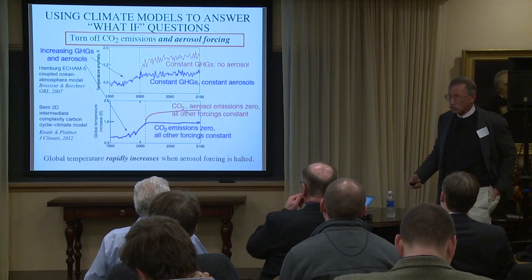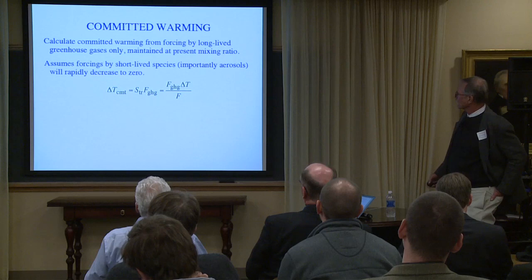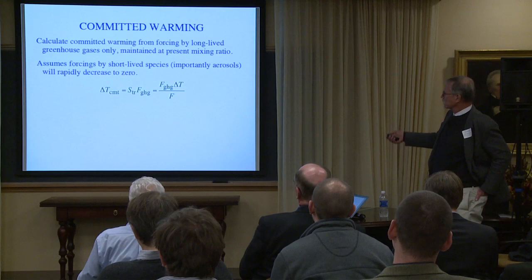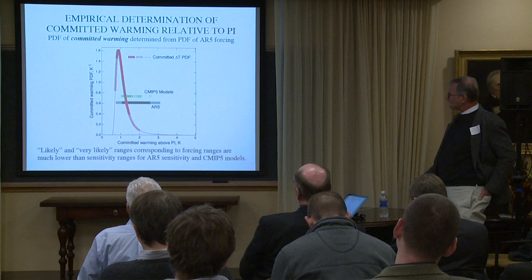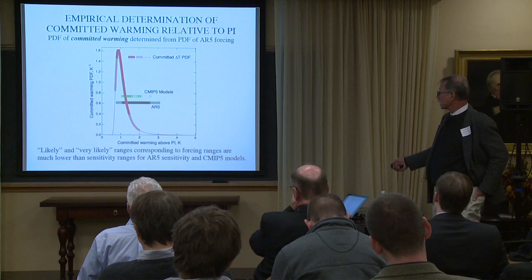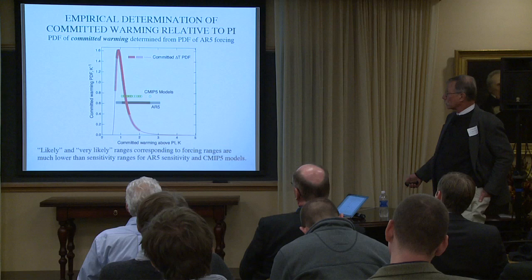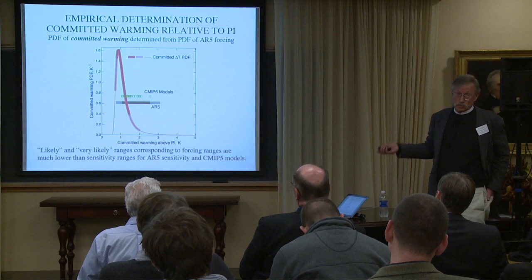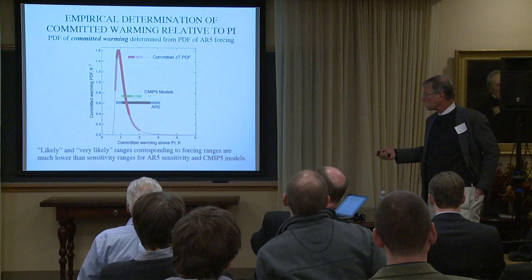This leads to the concept of committed warming — a term I'll introduce and define. It assumes that forcing by short-lived species, importantly the aerosols, goes to zero. We calculate the committed warming: the change in temperature equals the forcing of greenhouse gases divided by total forcing, which is still dependent on the total forcing — which I don't know — times delta T, which I do know. So I get a PDF that looks essentially identical to the transient sensitivity PDF I just showed. It basically says we've got a committed warming above pre-industrial in the likely range up to 1.5°C, maybe somewhat below 1°C. We don't know. In the very likely range it goes perhaps up to 2°C — we may be committed to 2°C, with 5% of the PDF beyond that. We're committed to that warming; we're just currently offsetting it with aerosols.